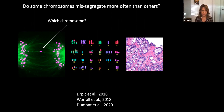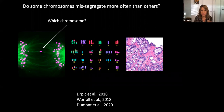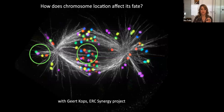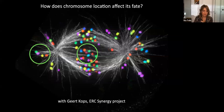A key question: which chromosome is making mistakes more often? Do some chromosomes make these mistakes more often than others? We asked whether the chromosome's location with respect to the mitotic spindle will affect its fate — meaning whether it will segregate correctly or not. The idea is that it matters whether the chromosome is found behind the spindle pole or in the central part of the cell, and we wanted to test this.